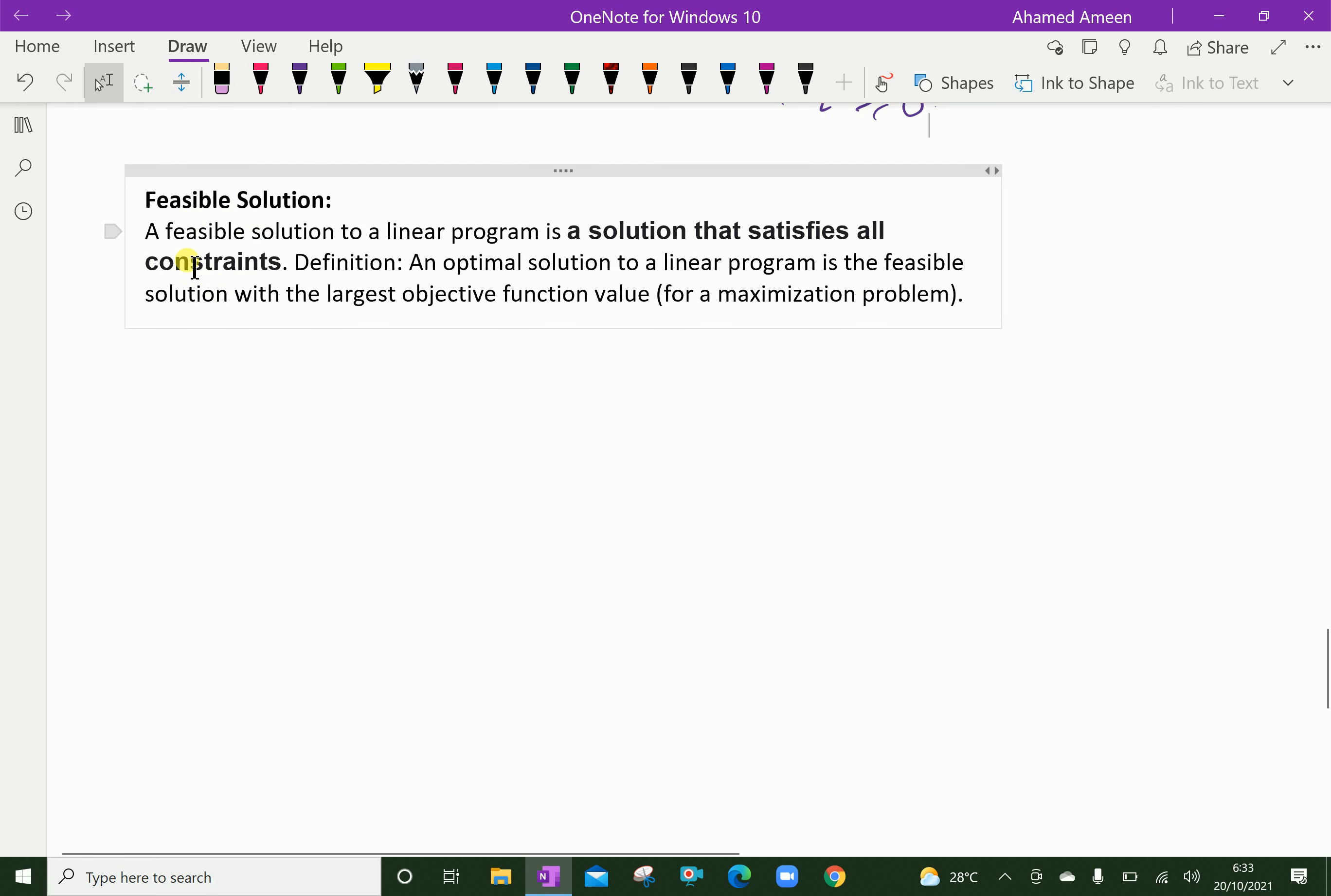About the solution, we'll discuss something. Feasible solution. A feasible solution to a linear program is a solution that satisfies all constraints. An optimal solution to a linear programming is the feasible solution with the largest objective function value for a maximization problem.